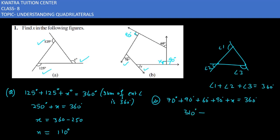310 degrees plus x equals 360 degrees. X value is 360 minus 310, which is 50 degrees. We used the same theorem: sum of exterior angles of any polygon is 360 degrees. So the first one is 110 degrees, second one is 50 degrees. Now we'll be moving to the second question.